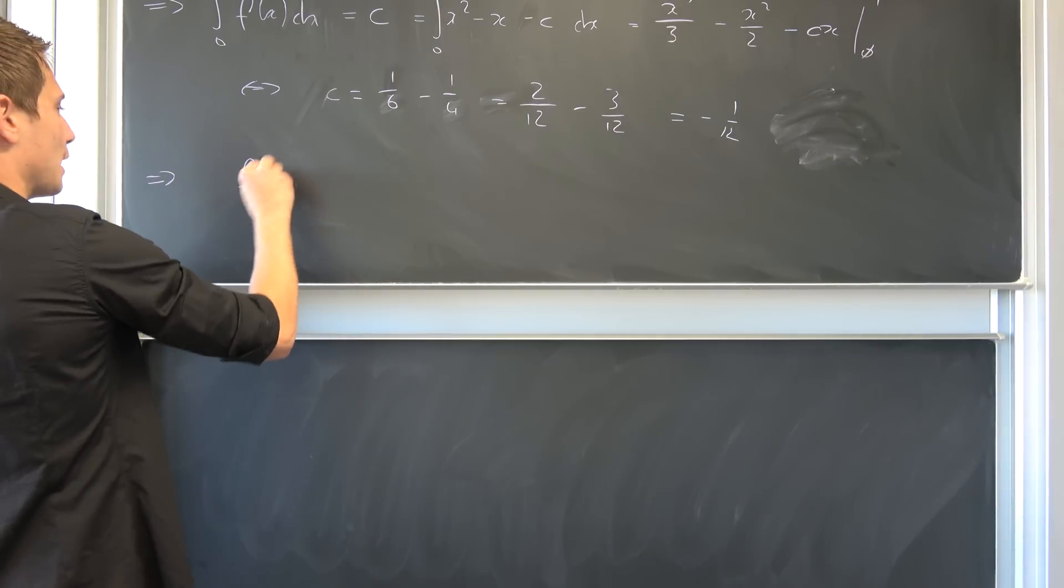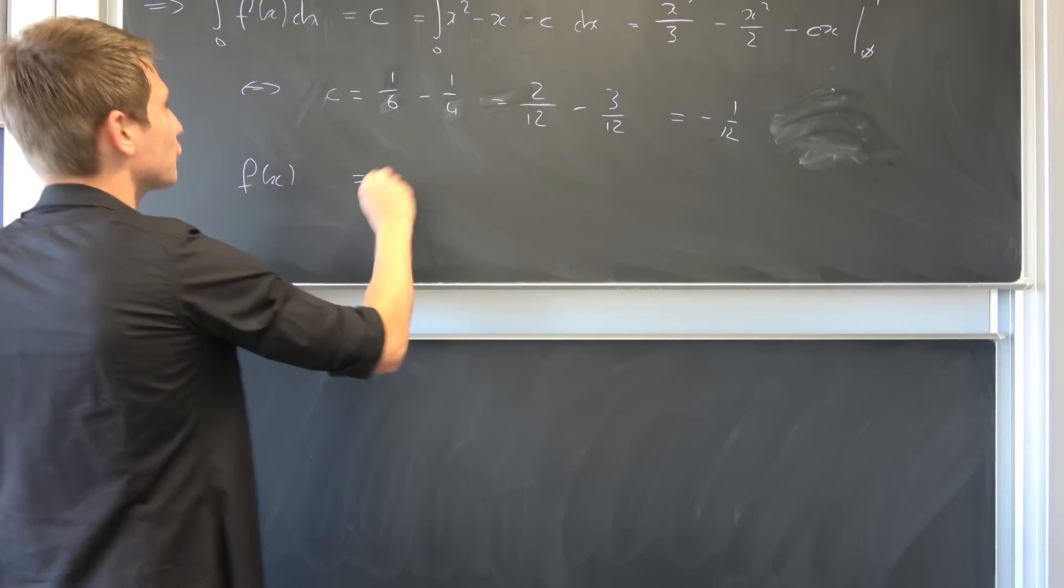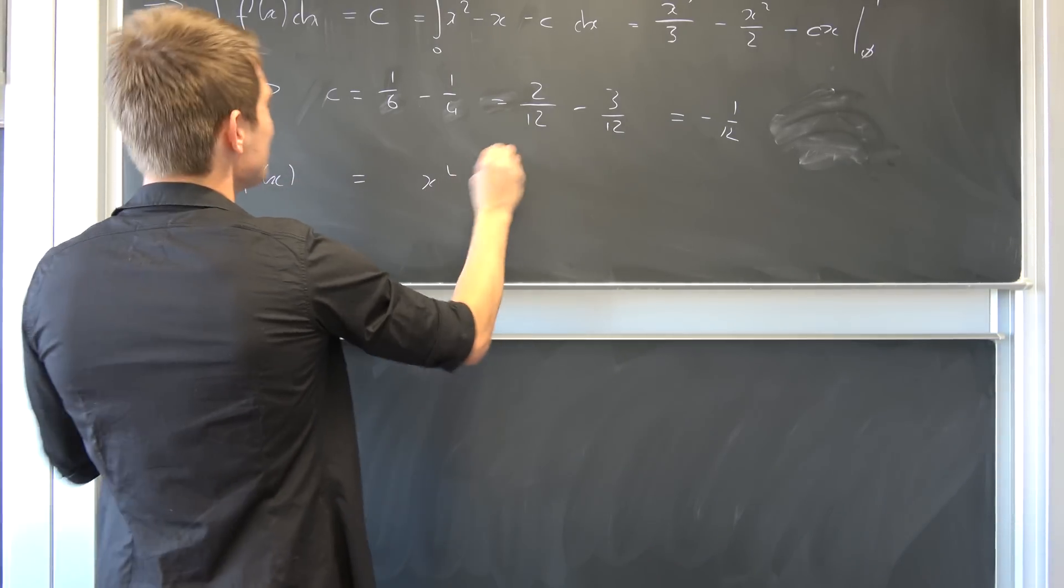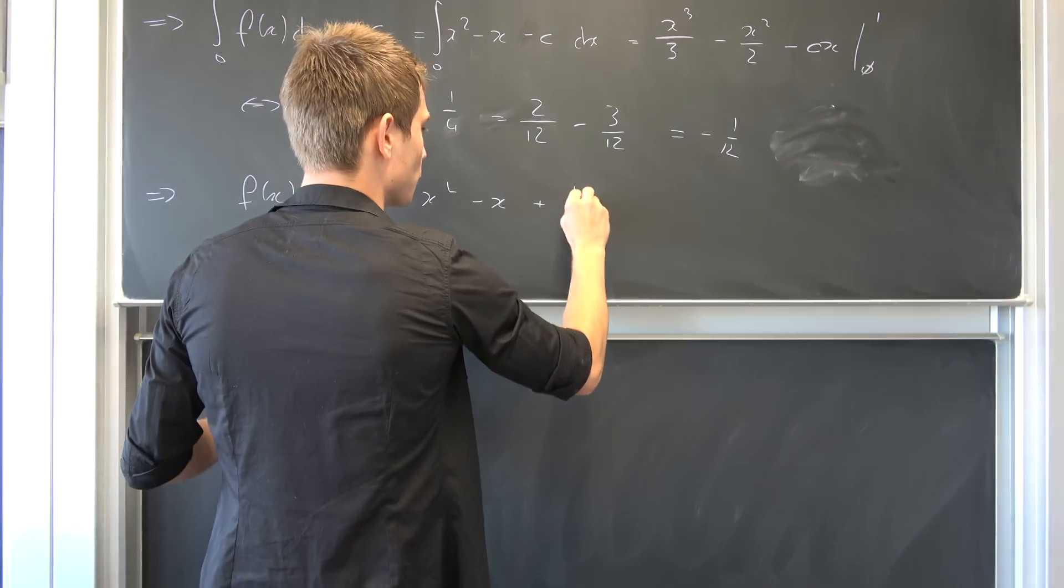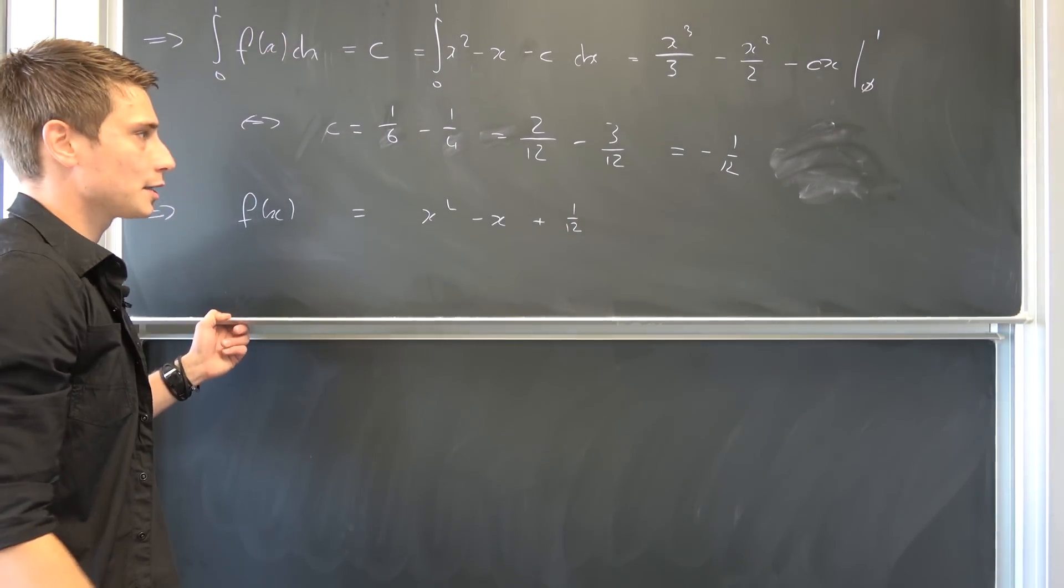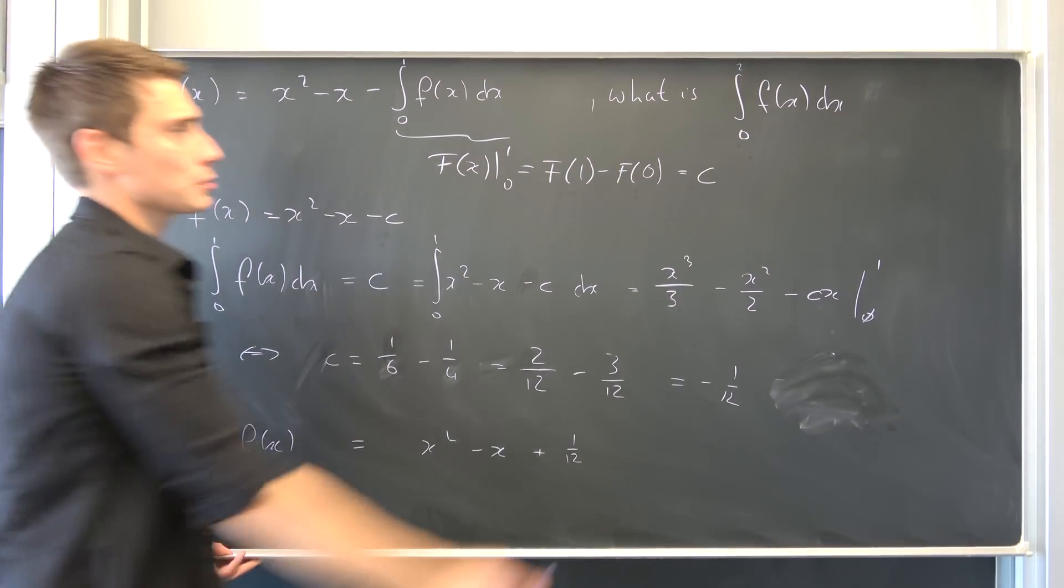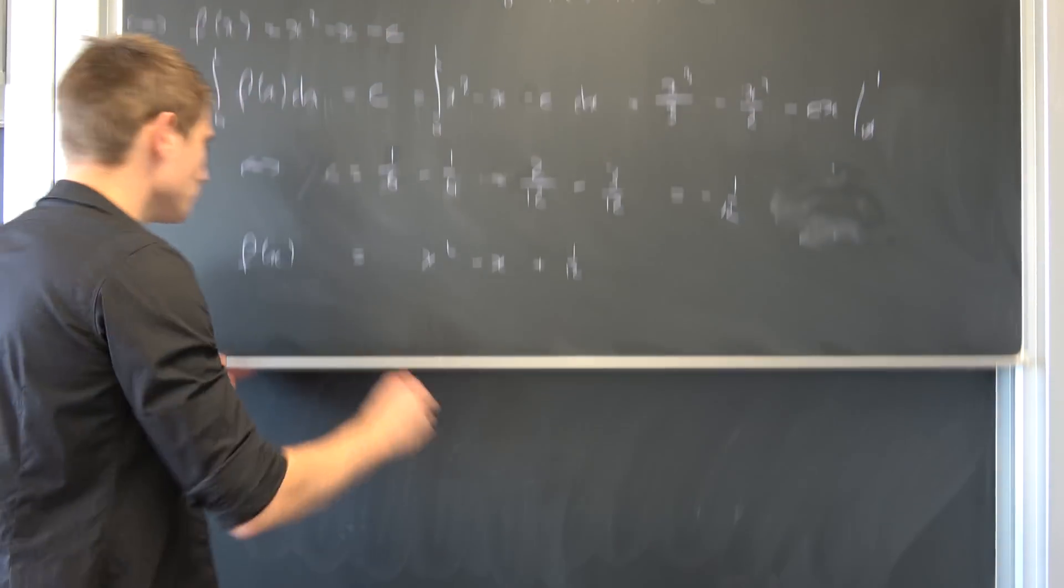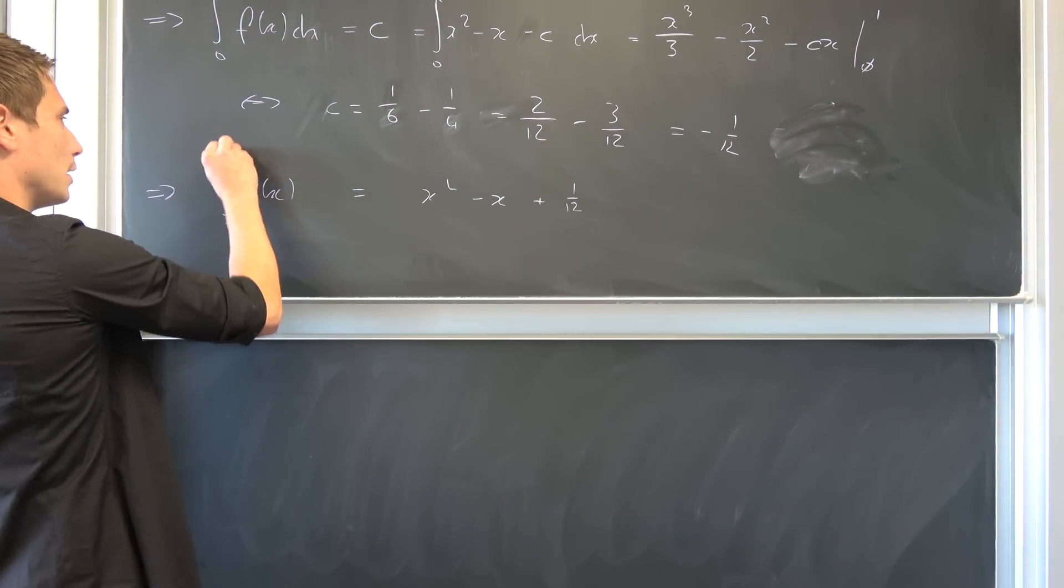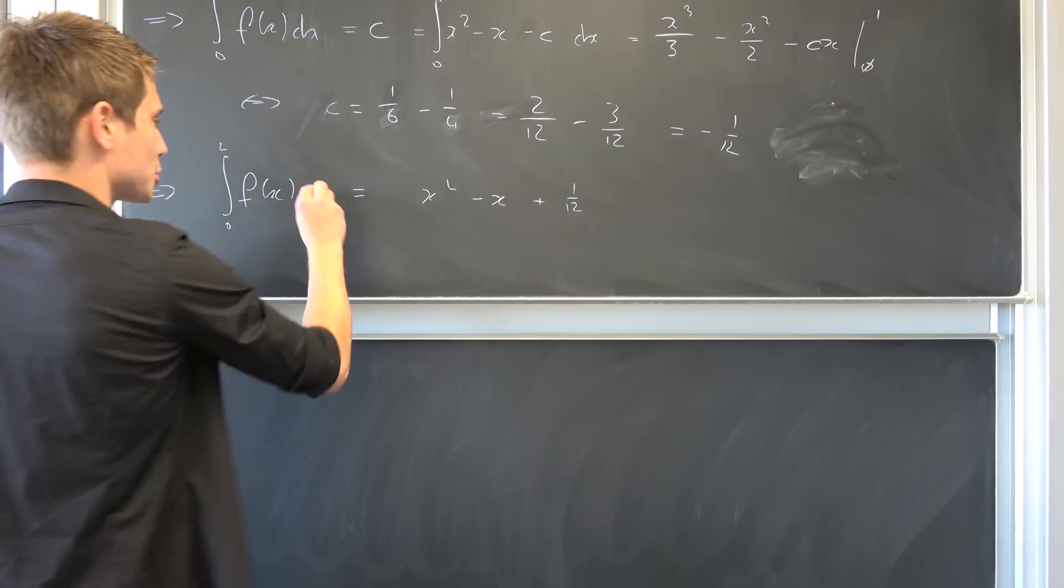So we end up with minus one twelfth as our constant, and now we can plug this into here actually. So we end up with f(x) being nothing but x squared minus x minus, minus, so positive one twelfth. And now we are basically done because we can now safely integrate both sides with respect to x from zero to two and find out what is in question actually.